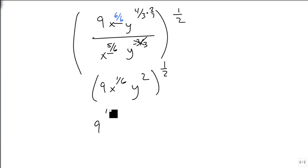So now we distribute the 1 half, so we get 9 to the 1 half, times x to the 1 6th, times y squared, times 1 6th, times 1 half. And so we get 3 square root of 9, x to the 1 12th, y, as our answer.